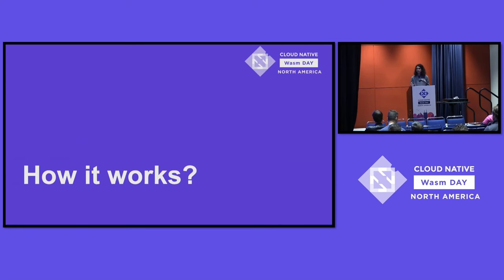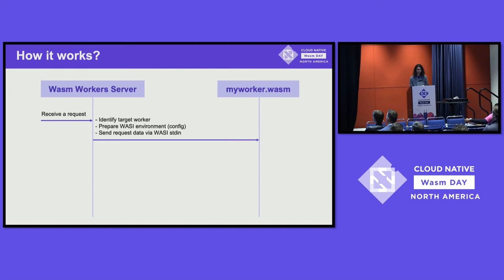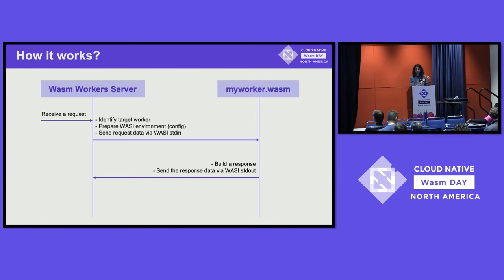So how does it work internally? Wasm Worker Server is the CLI and server listening for requests, and then there's my-worker.wasm, a specific worker written in Rust or Go that replies to a URL. When a request arrives, Wasm Worker Server identifies the target worker based on the file list, prepares the Wasm environment based on configuration, enables granted features, then serializes the request and passes data via stdin. The worker does its job, provides a response, and sends serialized data back via stdout. Wasm Worker Server then returns the response.